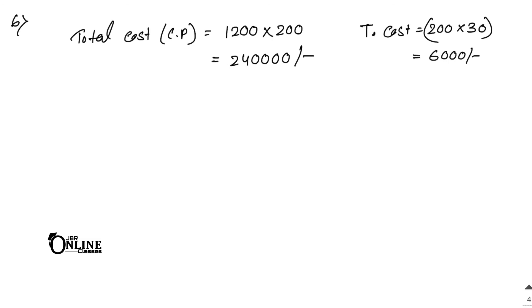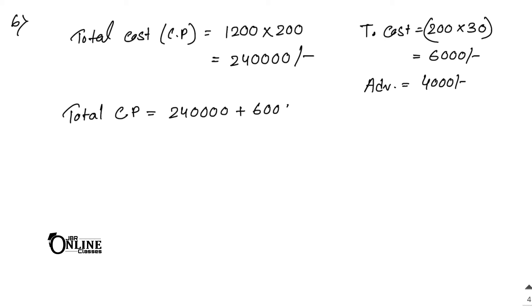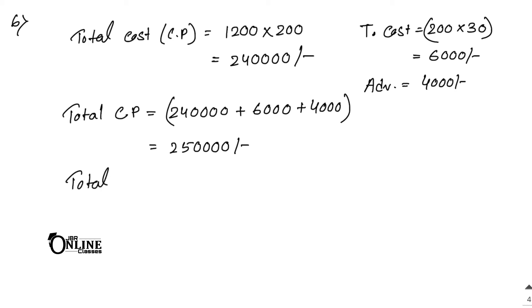He also spent 4000 on advertising, so advertising cost equals 4000. Total CP equals 240,000 plus 6000 plus 4000, which equals 250,000.